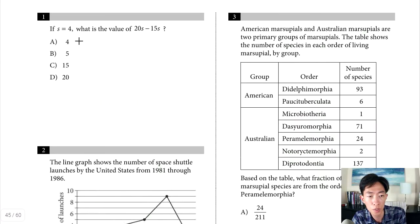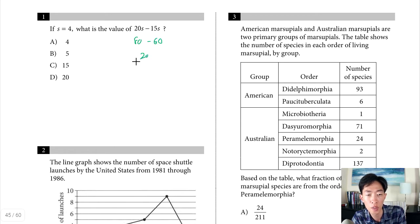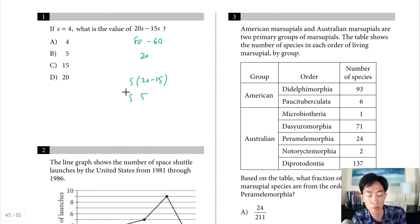Question 1: if s equals 4, what is the value of 20s minus 15s? You can do this in your head: 20 times 4 is 80, minus 15 times 4 is 60, so 80 minus 60 is 20. Alternatively, factor out s to get s times 5; if s is 4, that's also 20. Whatever method is faster works.